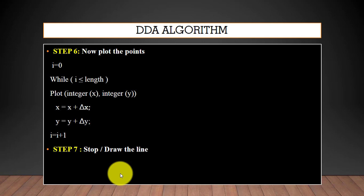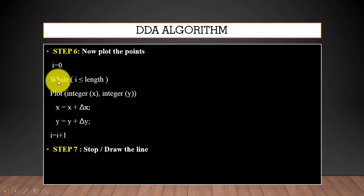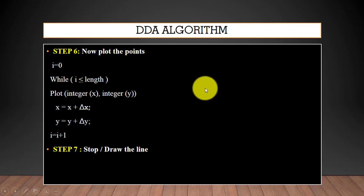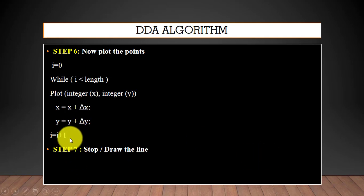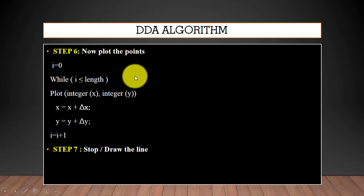In step 6 we will plot the points. We check: while the value of i is less than or equal to length, if the condition is true then we plot the point. After that we generate the new point using the update equations, then we increment i. When the condition becomes false, we stop and draw the line.